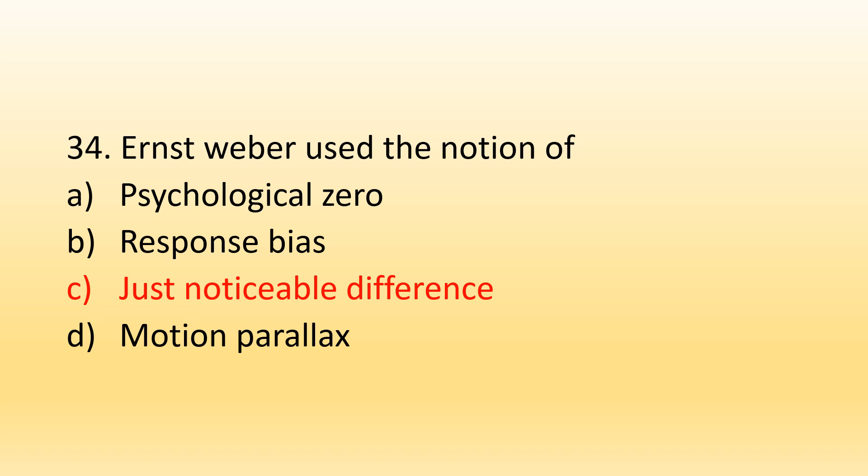Response bias is a problem in research where the respondent is not giving accurate responses, and their responses need to be evaluated and judged. There are many types of response bias. Psychological zero is not a proper concept here. Motion parallax is a concept in monocular depth cues: when we are moving, nearby objects appear to move in the opposite direction, while farther objects appear to move in the same direction — this is due to the motion across the retina based on where we focus our concentration.